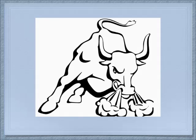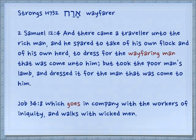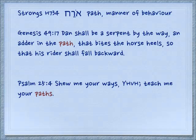There's one more word with a different spelling that can also be part of this similar-words group, and this is arach with a chet instead of a kaf. The noun appears in a few places. 2 Samuel 12:4 — from the parable that Nathan told David. In Job 34:8, this appears as a verb but it is a noun in Hebrew: 'which goes in company with the workers of iniquity, and walks with wicked men.' The basic idea of this root is a path — not so much a pathway that we walk on, but a path as a manner of behavior.